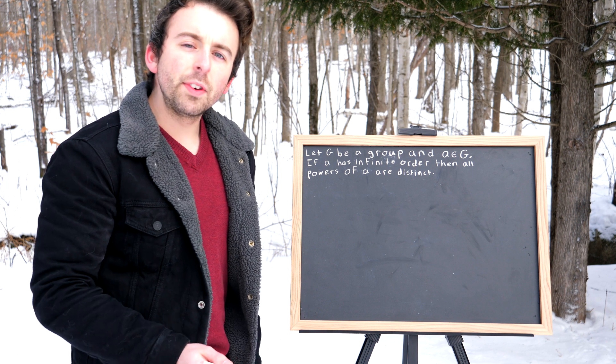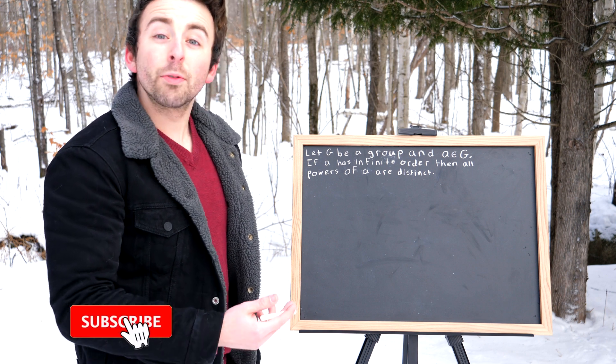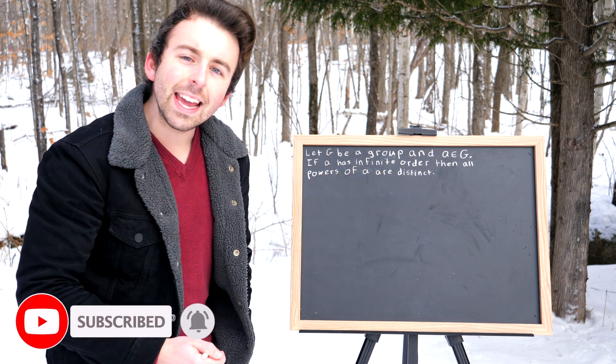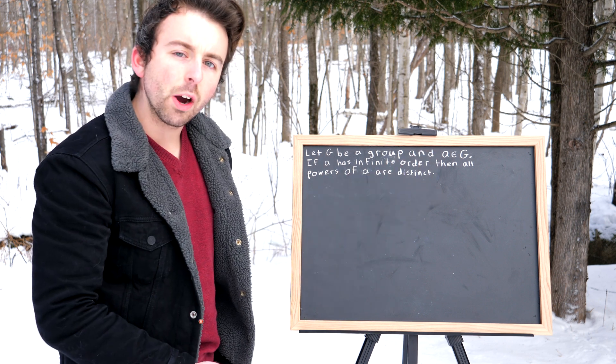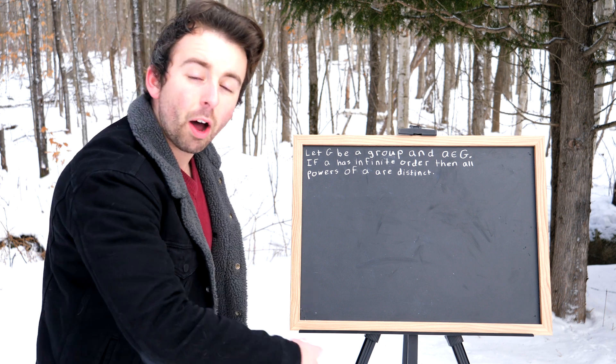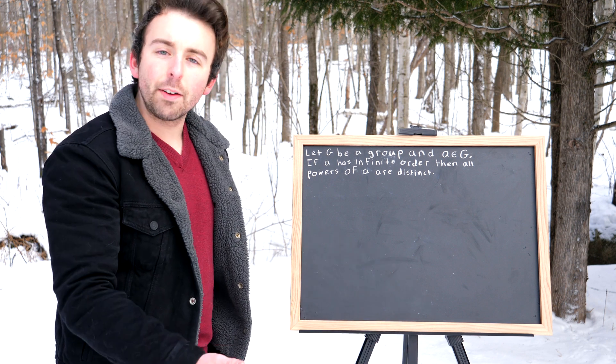Let's prove a quick result about infinite order elements in groups. The result is this: If we've got a group G and an element A in G which has infinite order, then every power of A must be distinct. So all the powers of A are different.